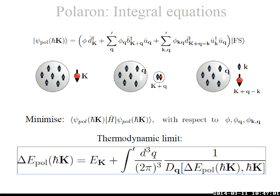We minimize the energy in the polaronic ansatz with respect to the variational parameters and get that the energy of the polaron is given by the kinetic energy of the impurity plus an integral over all q belonging to the Fermi sea, yielding a function that depends on the energy of the polaron itself. So the energy appears implicitly and we solve this equation numerically to get the energy of the polaronic branch.